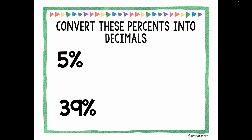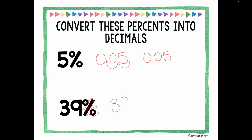Pause the video and try this one yourself. Let's take a look: remove the percent symbol, place the decimal point at the end, and shift two spaces to the left, adding a zero in the empty spaces. Therefore, 5 percent equals 0.05. For 39 percent: remove the percent symbol, you just have 39. Place the invisible decimal point at the end and shift two spaces to the left. Now you have 0.39.